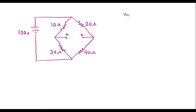Let me find the open circuit voltage between terminal A and B. Here we can observe that 10 ohm and 30 ohm — when we remove this load resistor, 10 and 30 will become in series, and 20 and 40 become in series. So the voltage across the 10-and-30 branch and the voltage across the 20-and-40 branch is the same, that is 100 volts.